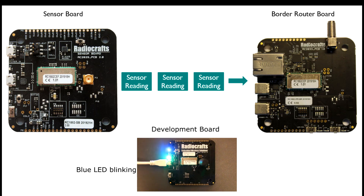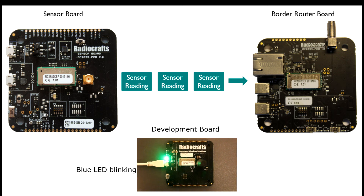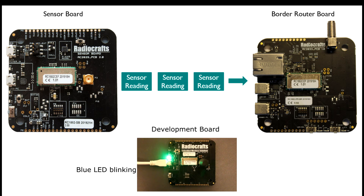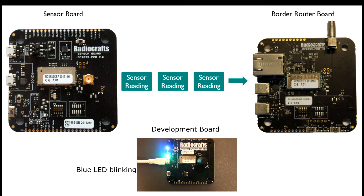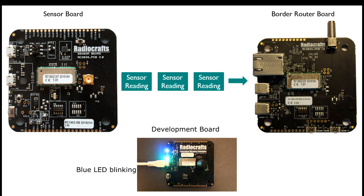All three boards come pre-programmed to set up and run a simple RIM test network. The readings of one of the sensors of the sensor board is forwarded to the border router, and the LED on the development board will blink when it's connected to the network. Now that we have reviewed the contents of the development kit, let's go ahead and setup a RIM network using the pre-programmed boards.